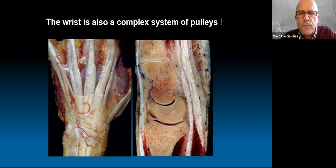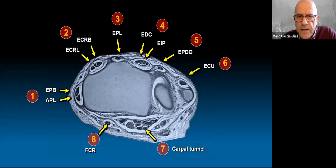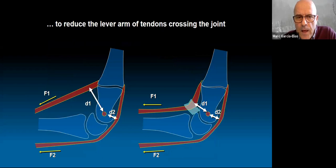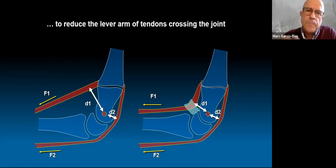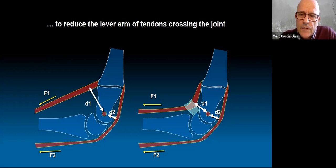We should consider the wrist as a complex system of pulleys. Not only the six dorsal compartments but also the flexor carpi radialis compartment and the carpal tunnel are important pulley structures for wrist function. If there is separation of a tendon from the center of rotation, the lever arm increases and the antagonist muscle must work much harder to compensate. By using the pulley, the moment arm of the tendon is balanced to the dorsal moment arm of the extensors. Pulleys are not irrelevant — they are very important.